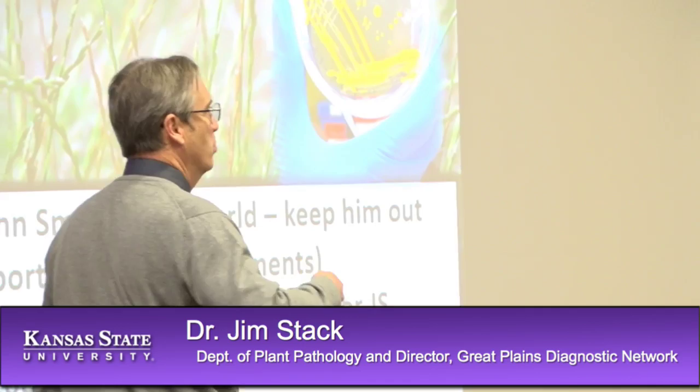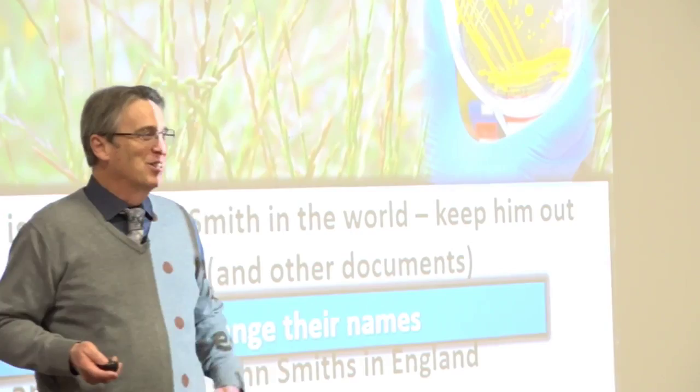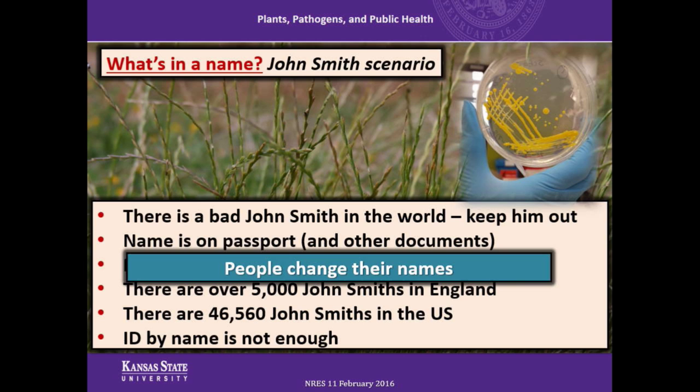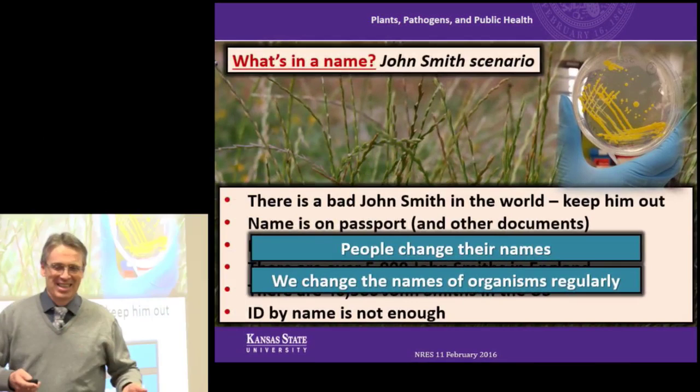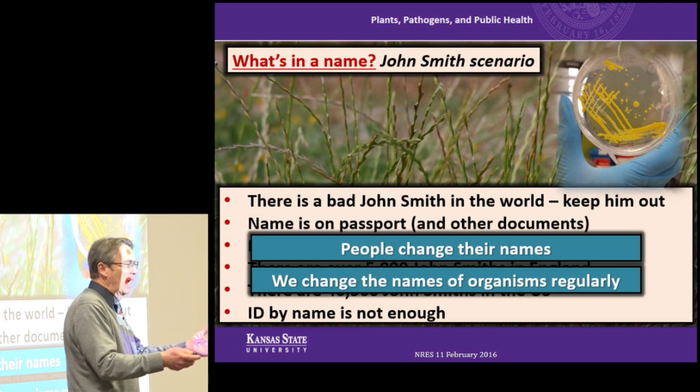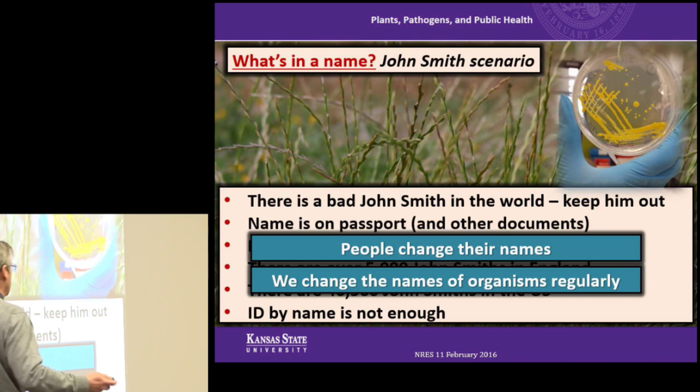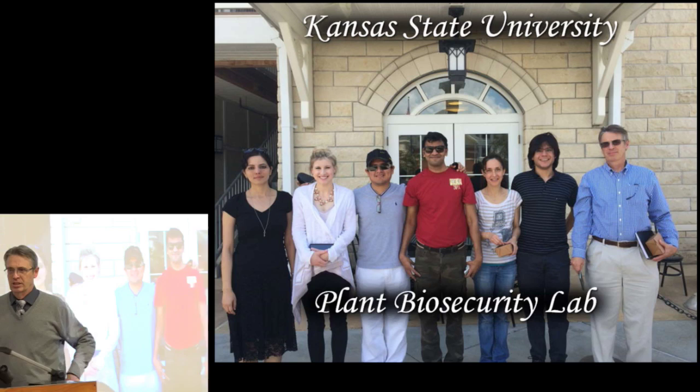People change their names. We want to keep John Smith out, but what if he changed his name to Fred Jones? He's coming in. Well, we regularly change the names of organisms. As we learn more about organisms, we realize that we misnamed them. When you look in the literature for an organism, you can oftentimes find four, five, six names for the same organism. So which one do you use when you're trying to make a decision? That's what we do in the plant biosecurity lab.